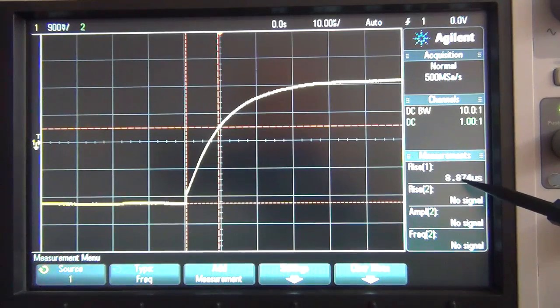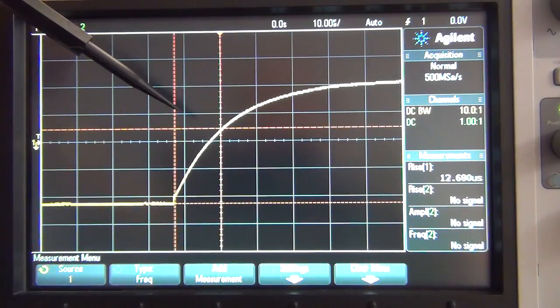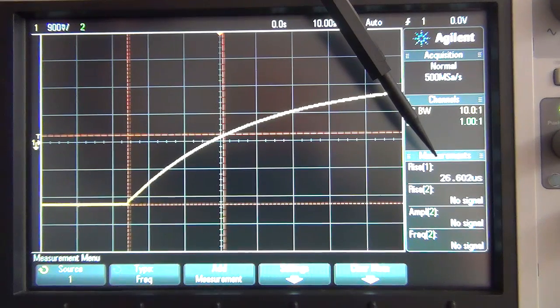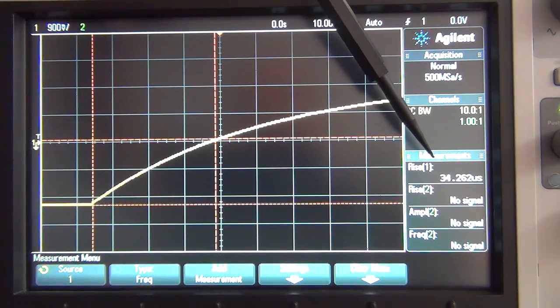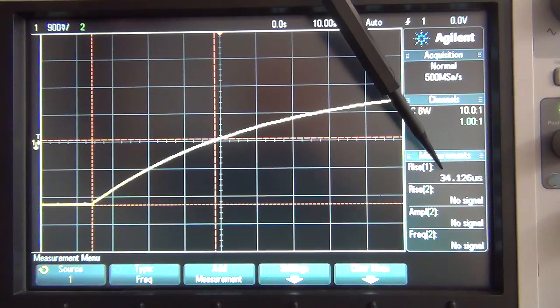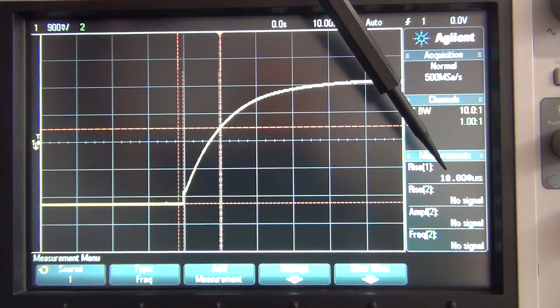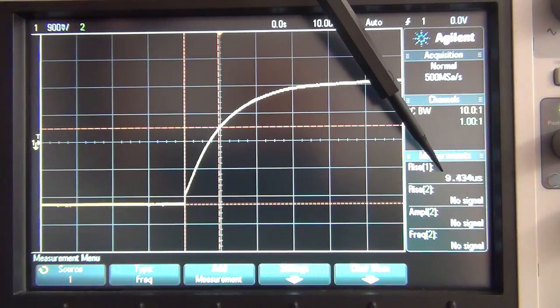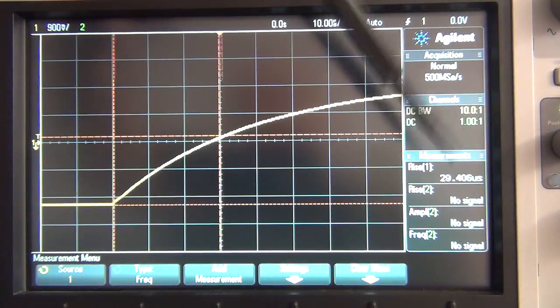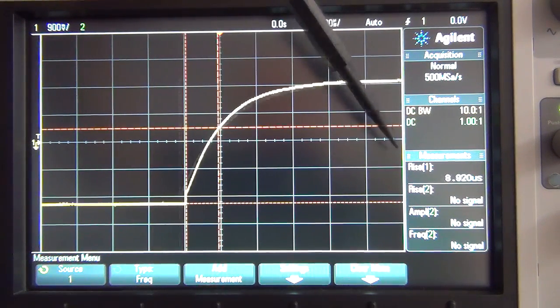On here you can see it actually gives you a measurement for the rise to that point and it's bouncing around 8 to 9 microseconds. So according to that formula, if that increases then our capacitance is increasing. So now I'm going to turn the dial and just note what's happening to the wave. You can see the change and look what's happening to the time. It's increasing. I'm turning it all the way.